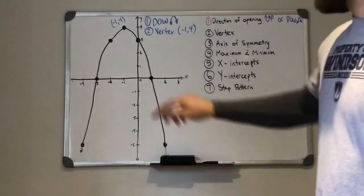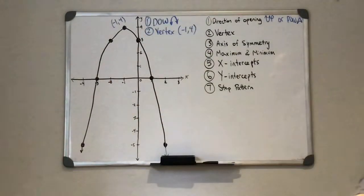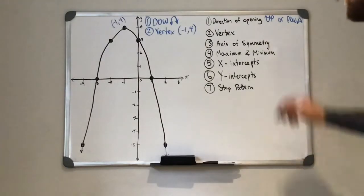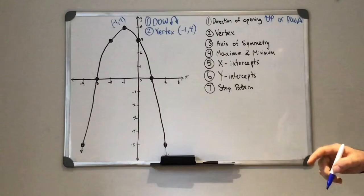Okay so this is kind of the peak of our parabola. If it was going the other way it would be at the bottom of the parabola. So our vertex. That would be our vertex here for number two.